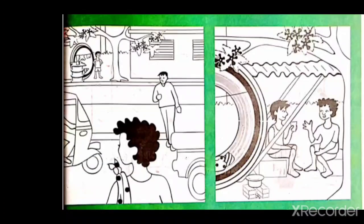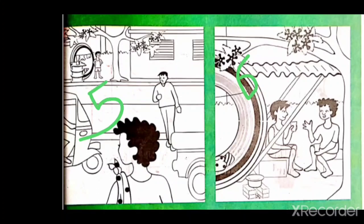Here two more images are given. In the fifth image, we can see again the same scene as the first one — Chotu's house is on a busy route. And in the sixth image, we can see he is talking to his friend. So these are all about the images.